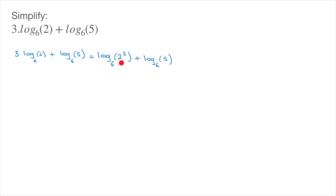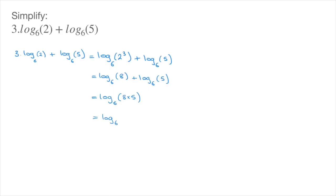Since 2 to the power of 3 is equal to 8, we can state that this equals log base 6 of 8 plus log base 6 of 5. We now have 2 logarithms which are being added, and both are written in the same base, which is 6. We can therefore use the addition rule for logarithms to state that this equals log base 6 of 8 times 5, which is 40. And we're done — we've just simplified this logarithmic expression.